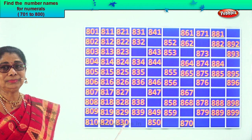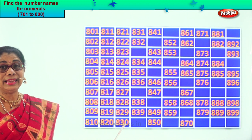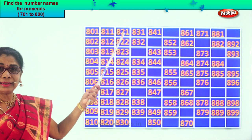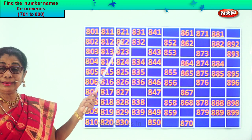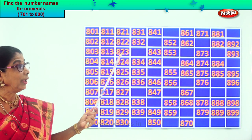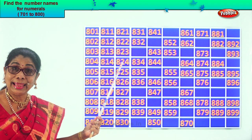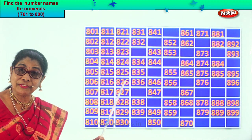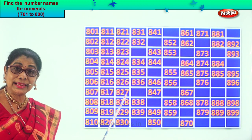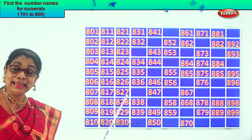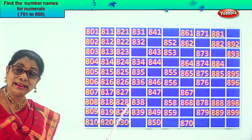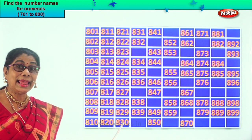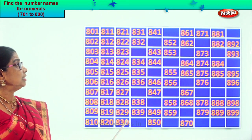Let's say together aloud — 821, 822, 823, 824, 825, 826, 827, 828, 829, 830.